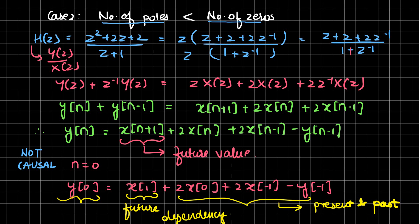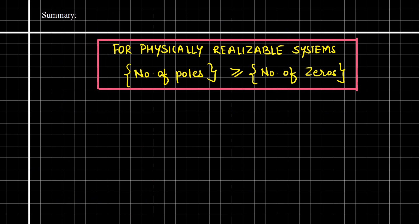After this complete discussion, we can conclude that for physically realizable systems — that is, for causal systems — the number of poles is always greater than or equal to the number of zeros. Thank you.